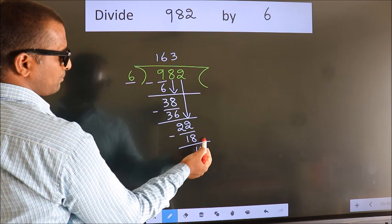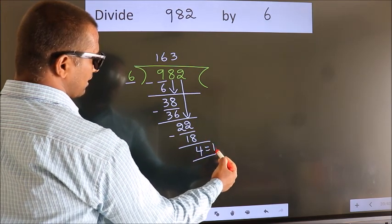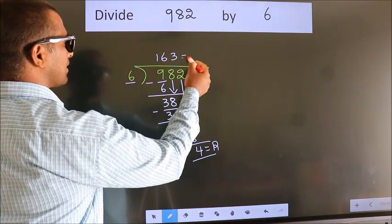No more numbers to bring it down. So we stop here. This is our remainder. This is our quotient.